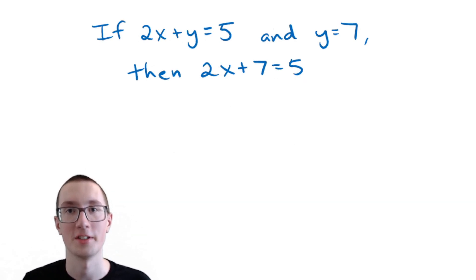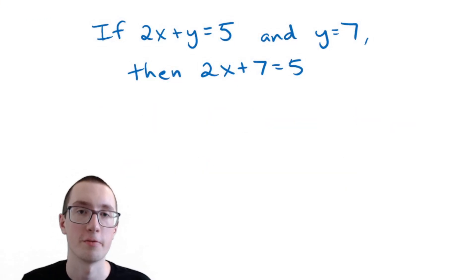Here's another example. Go ahead and pause the video and try this. So we see here, if two X plus Y equals five, and Y equals seven, then two X plus seven equals five. It's gonna be another one of those complicated ones. So we're going to probably pick from the last two, transitive and substitution.